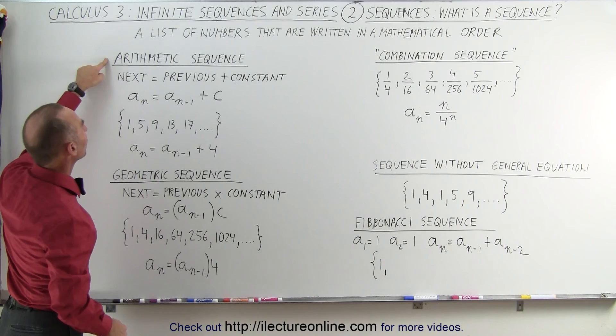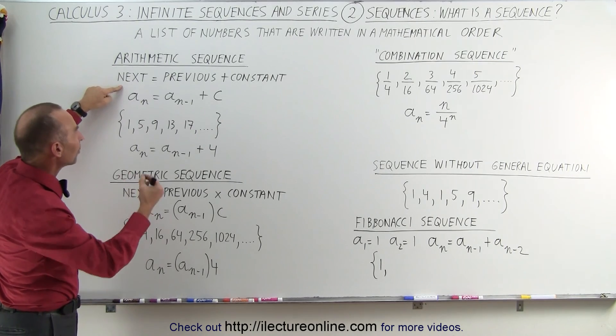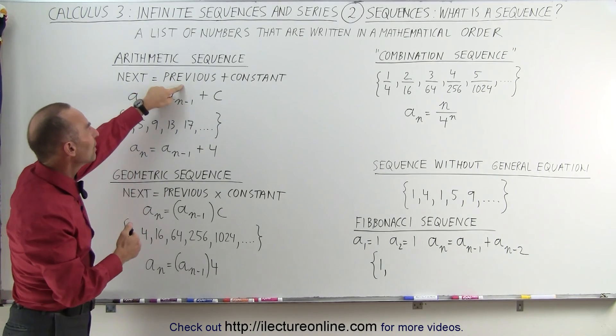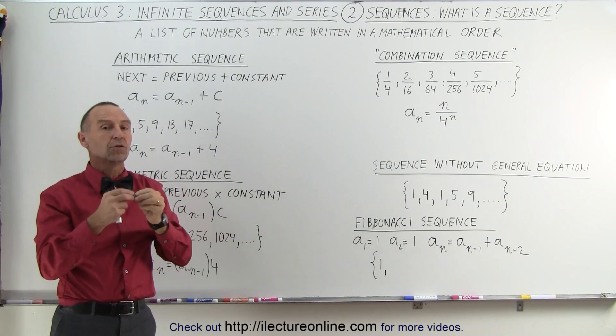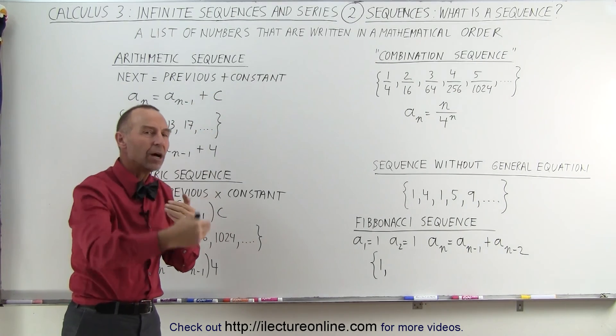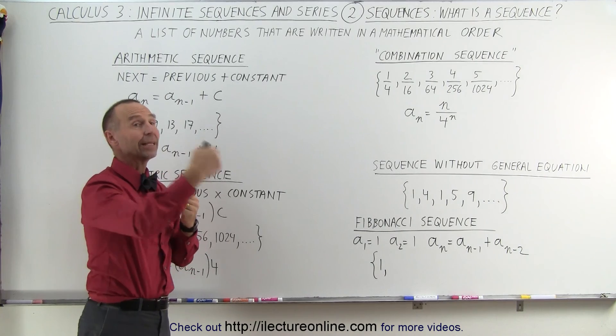First of all, the arithmetic sequence. The next number in the sequence equals the previous number plus a constant. So you always keep adding the same constant to the previous number to come up with the next number.